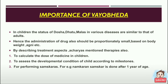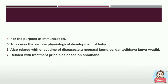The importance of Vayobheda: in children, the status of doshas, dhatu, and malas in various diseases is similar to that of adults, hence drug administration should be proportionately small based on body weight, agni, etc. Vayobheda helps to calculate the dose of medicine in children, assess developmental milestones, perform samskaras (e.g., Namakaran Samskara after 1 year), guide immunization schedules, assess physiological development, understand onset of diseases like neonatal jaundice, and determine treatment principles based on Shodhana.